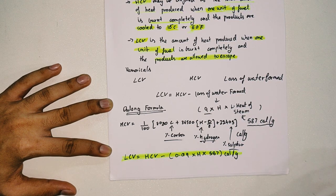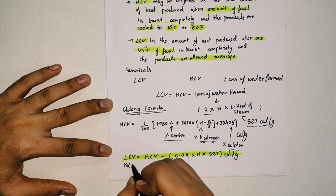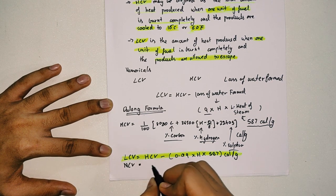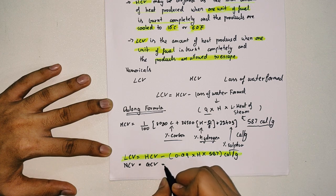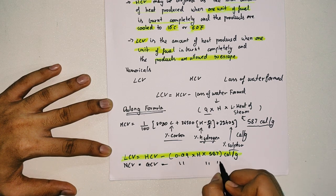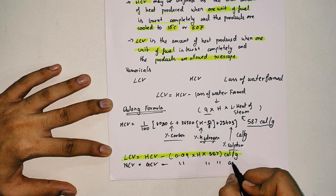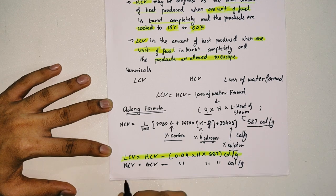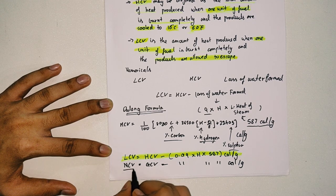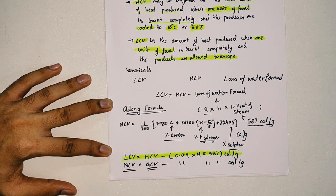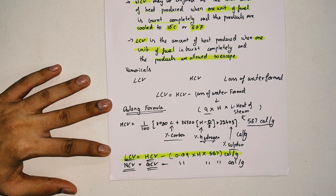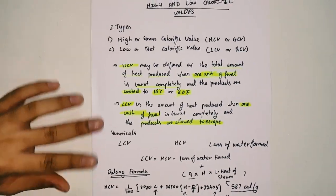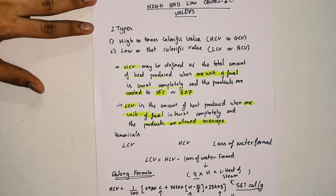LCV can also be called NCV, and HCV can also be called GCV. The rest of the formula remains the same with the same units, so don't get confused if a question asks for net calorific value or gross calorific value.